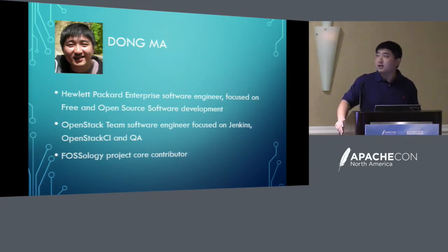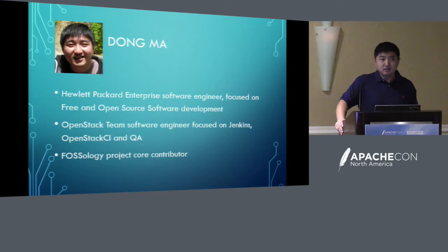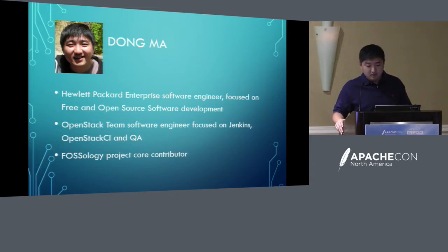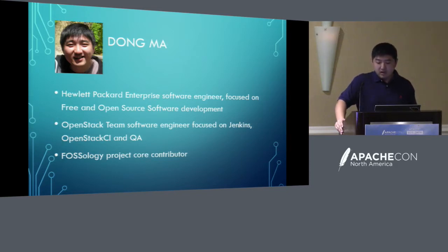I'm Dong Ma, currently living in Beijing, China. I'm working for Hewlett Packard Enterprise as a software engineer, mainly focusing on free and open source software development. I have been an active technical contributor to OpenStack project since the OpenStack Liberty release cycle. I'm also the code reviewer of the OpenStack subunit2circle project. I'm currently working for the HPE OpenStack team, mainly focusing on the Jenkins OpenStack CI and the QA part and the upstream contribution.